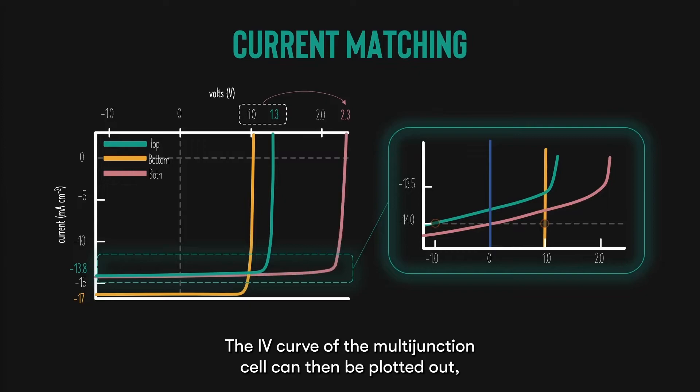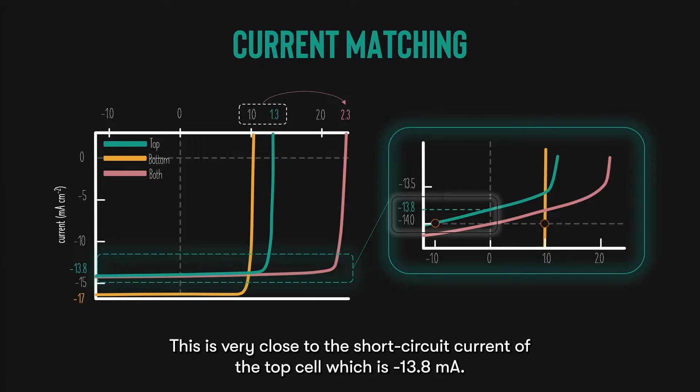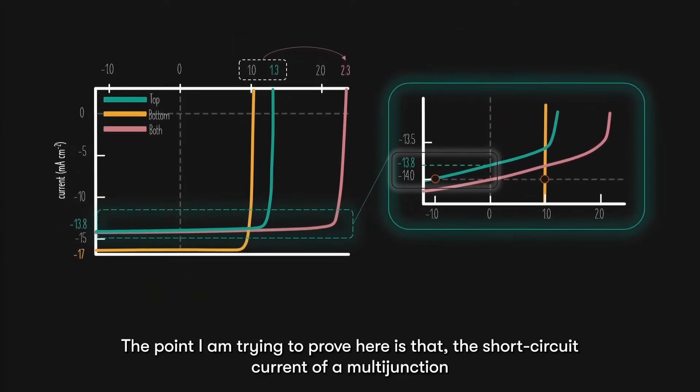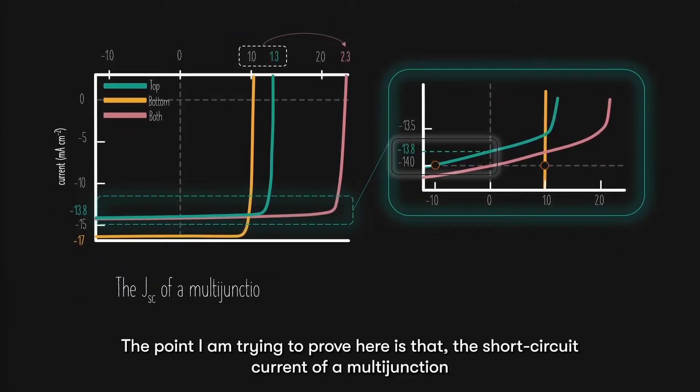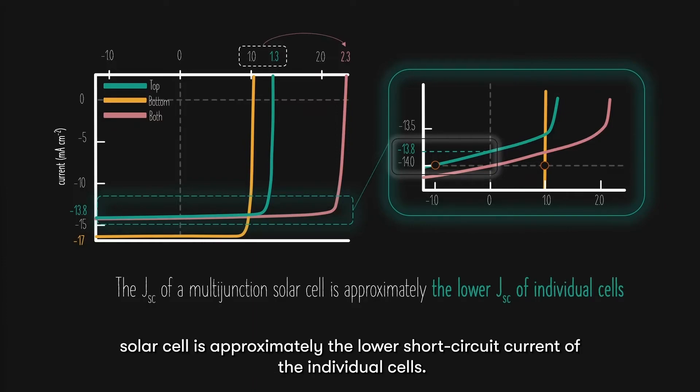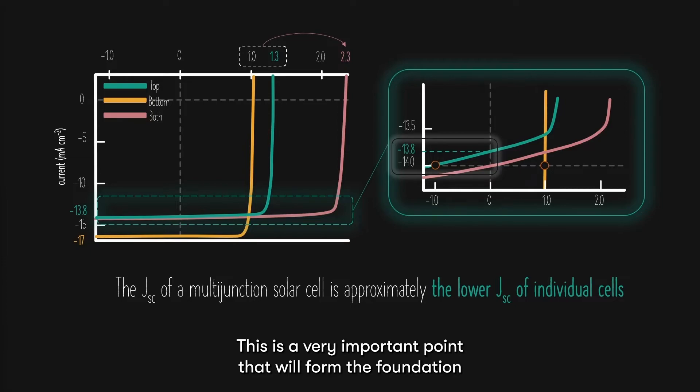The IV curve of the multi-junction cell can then be plotted out, with a short circuit current of negative 14 milliamps. This is very close to the short circuit current of the top cell, which is negative 13.8 milliamps. The point I'm trying to prove here is that the short circuit current of a multi-junction solar cell is approximately the lower short circuit current of the individual cells. This is a very important point that will form the foundation of our following discussions.